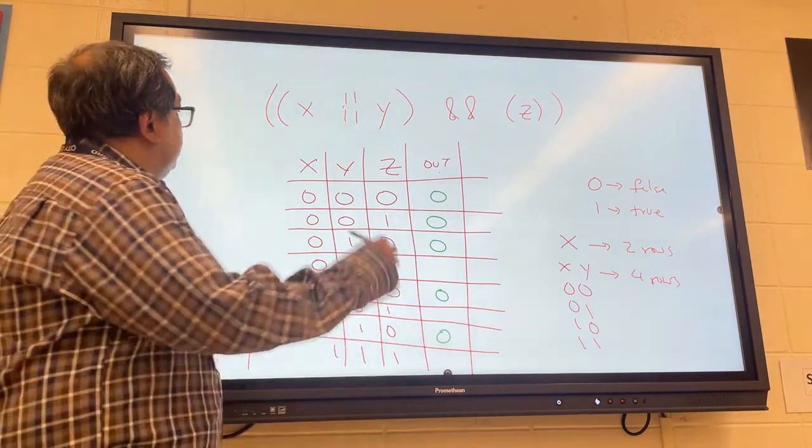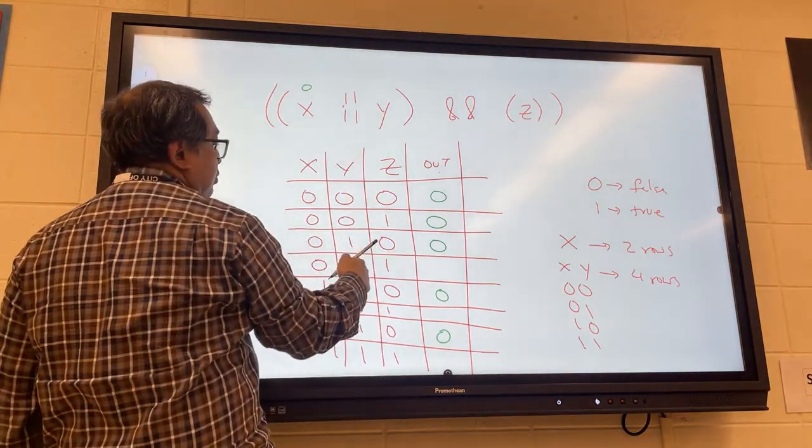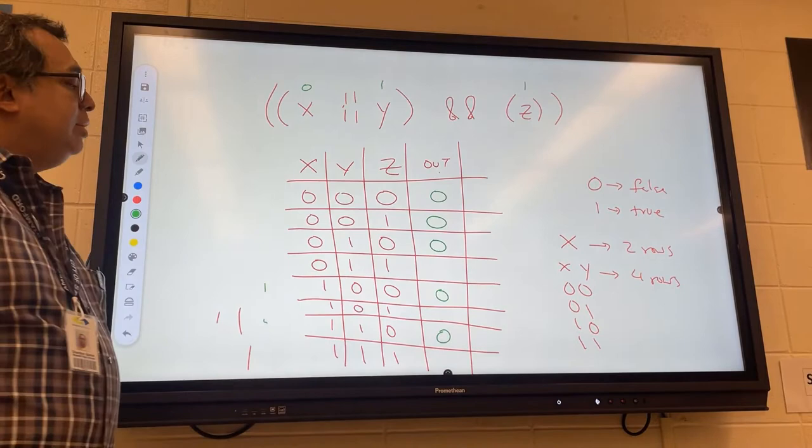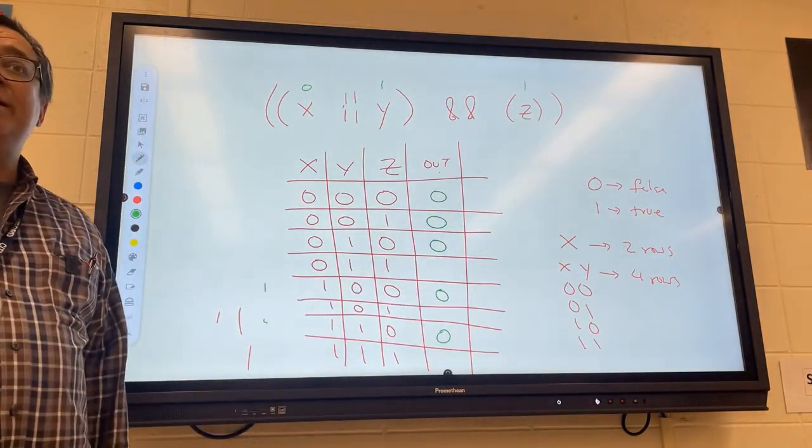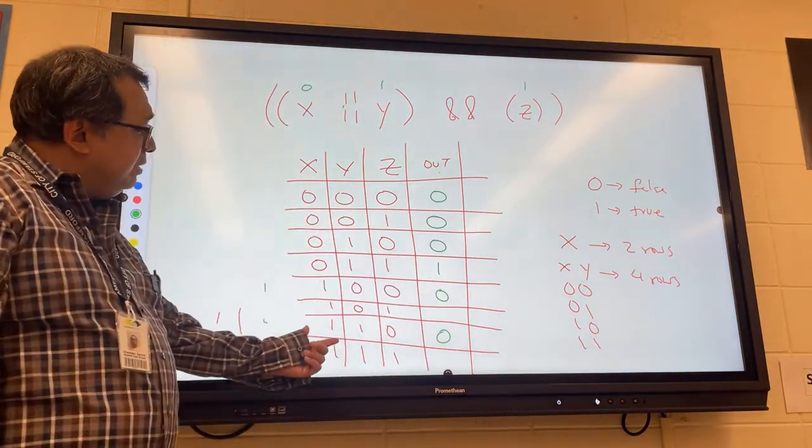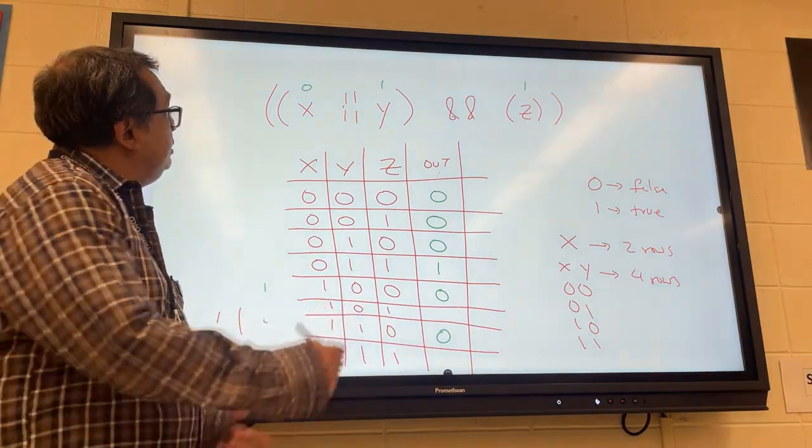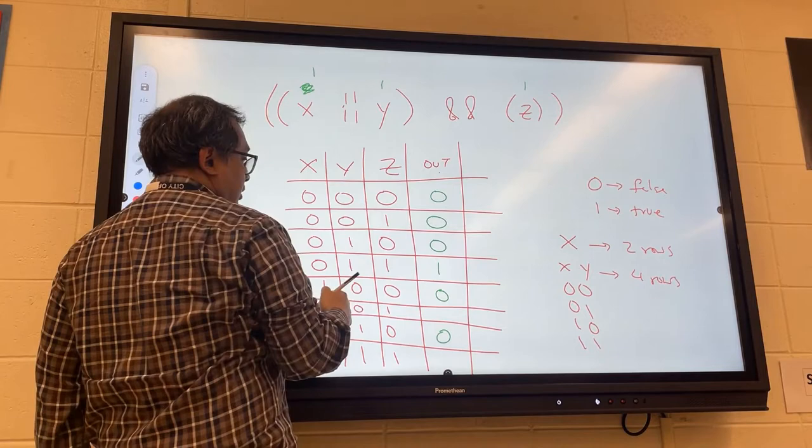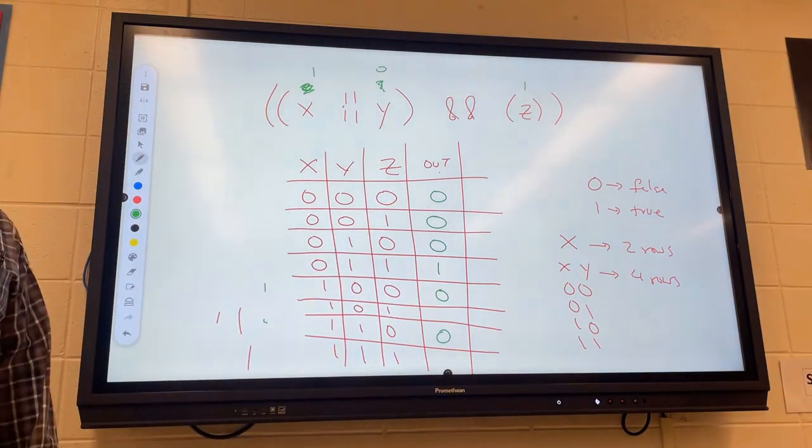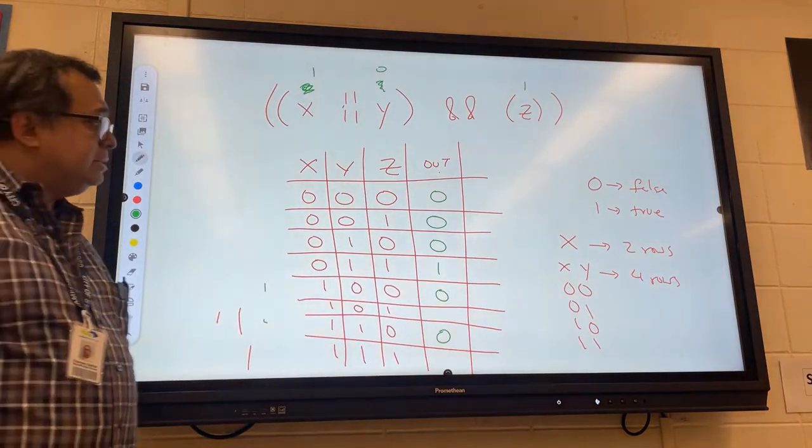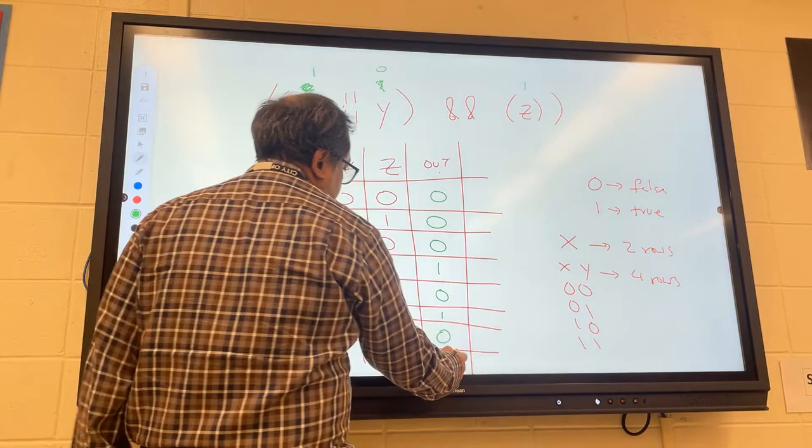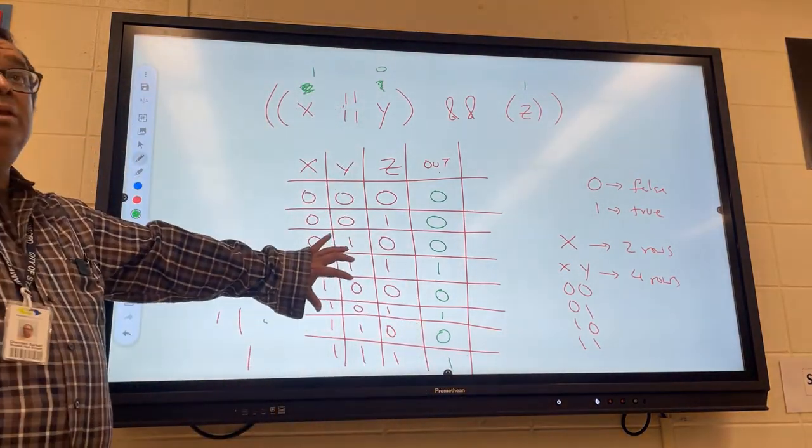And now we have to go and fill in these other ones here. What is the case when x is zero, y is 1, and z is 1? What's the output going to be for that one? Miss Ria? That's going to be a 1. And how about if x and y are both 1? Oh, sorry. x is 1, y is 0, and z is 1. What do we get for that one? Miss Tamara? That's also a 1. And what do we get if they're all 1? Mr. Degouge? 1. Okay. So this is a truth table for this expression.